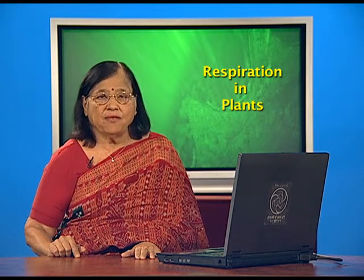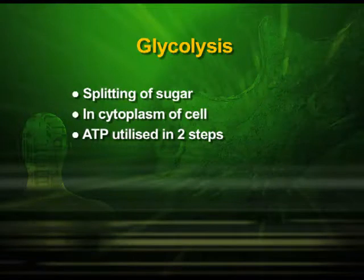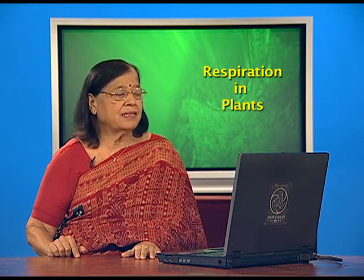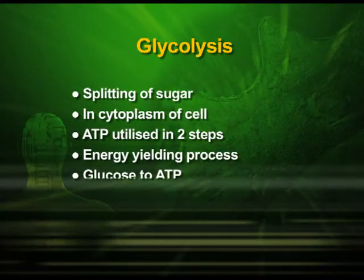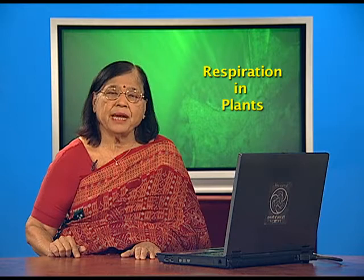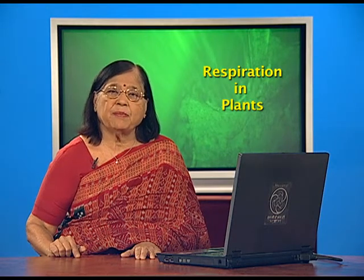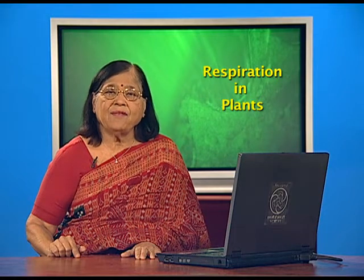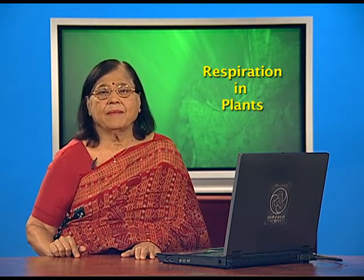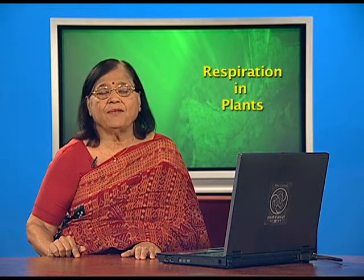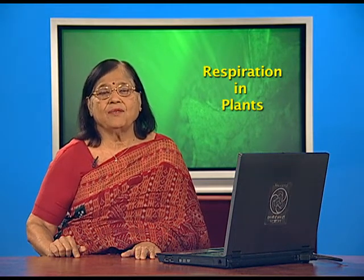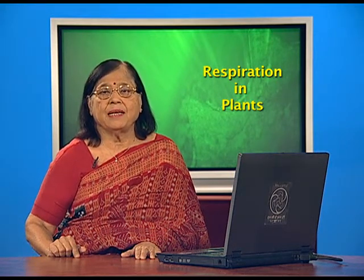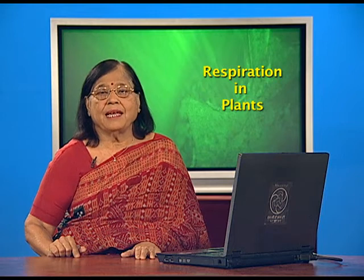Glucose undergoes many steps in glycolysis to give pyruvic acid. During glycolysis there is splitting of sugar, and it takes place in the cytoplasm of the cell. ATP is produced — that is the energy yielded during glycolysis. Glycolysis takes place in many steps, and at every step some enzyme is required.